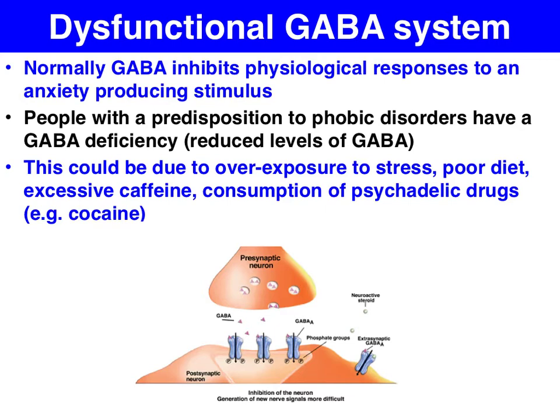Now some people have a dysfunctional GABA system due to possibly genetics, or maybe a poor diet, or maybe the consumption of psychedelic drugs such as speed, crack, cocaine, etc. So therefore, there's not enough GABA binding with those specialised receptor sites on the postsynaptic neuron, and therefore not enough of those chloride ions entering the postsynaptic neuron.